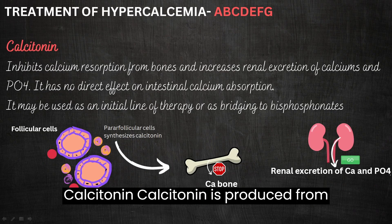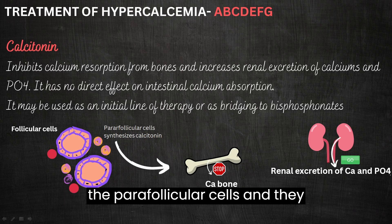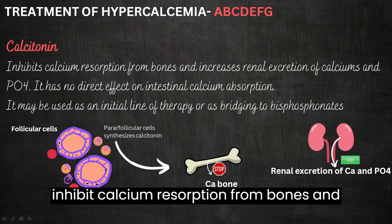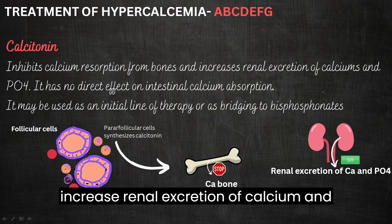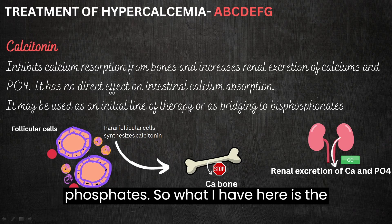Calcitonin is produced from the parafollicular cells. It inhibits calcium resorption from bones and increases renal excretion of calcium and phosphates.